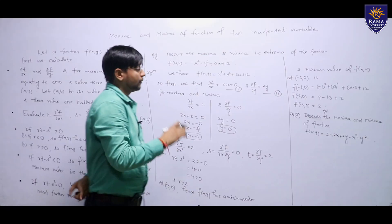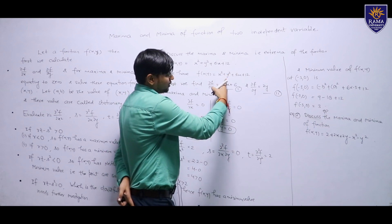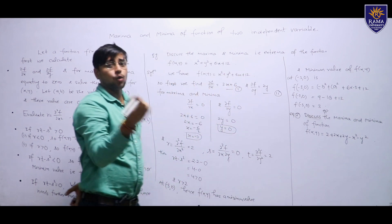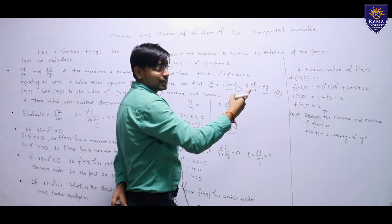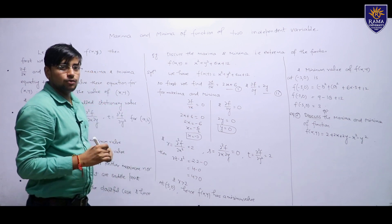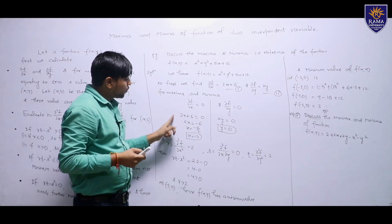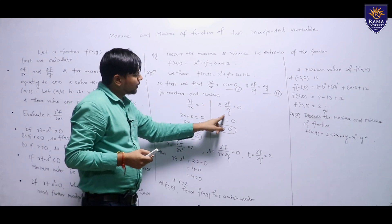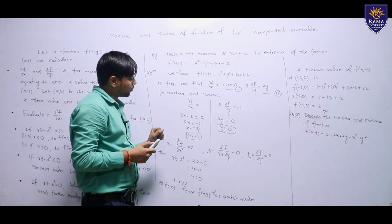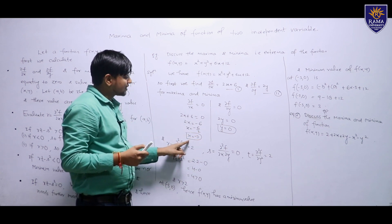And ∂f/∂y: differentiating with respect to y, y² gives 2y, while x² + 6x + 12 are treated as constants, so their differentiation is 0. For maxima and minima, setting ∂f/∂x = 0 gives 2x + 6 = 0, so 2x = −6, therefore x = −3.